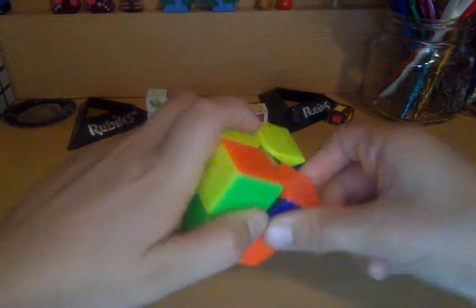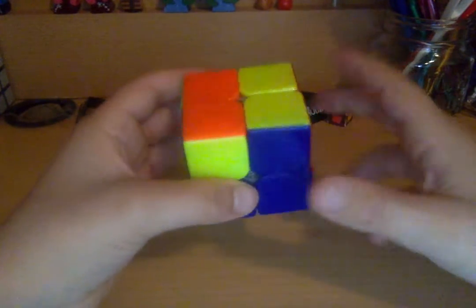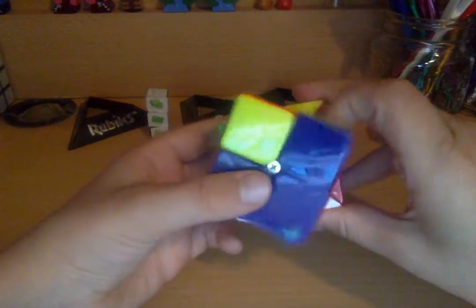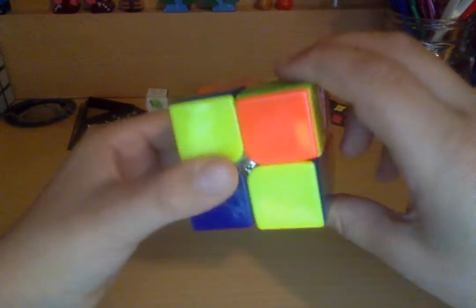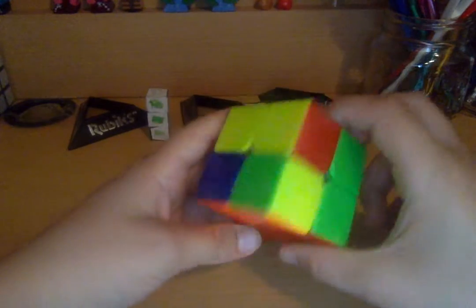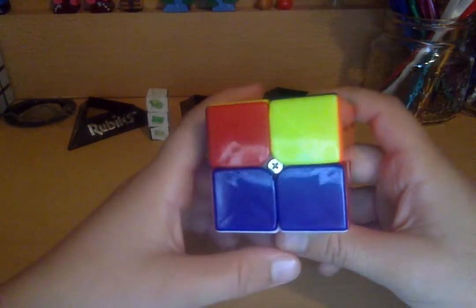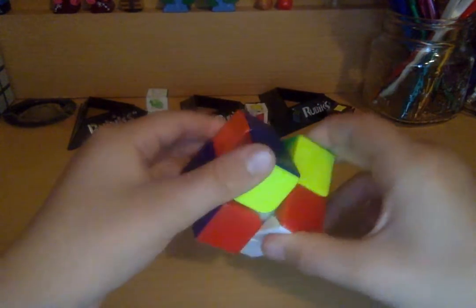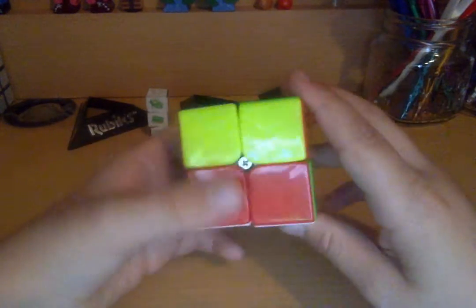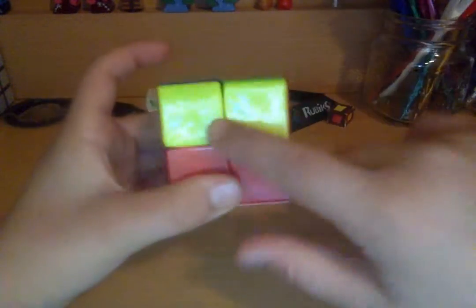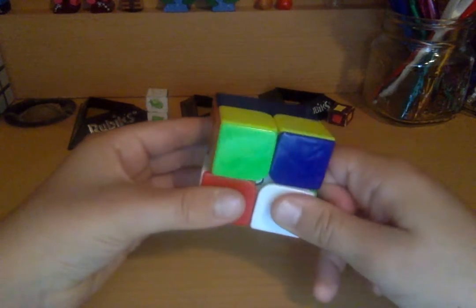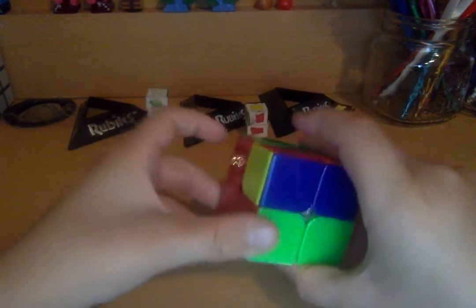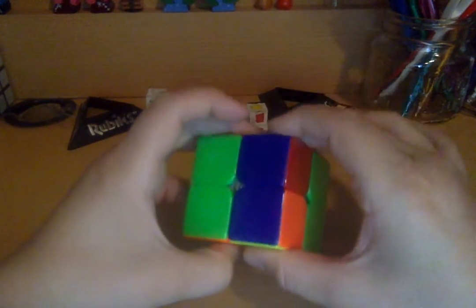If you have it over like this, that's perfect. If you don't, hold it like this so it's on your right. You want to do the same algorithm. Now hold it on the left, same algorithm. On the top, now you're going to hold any side that's towards you, same algorithm.